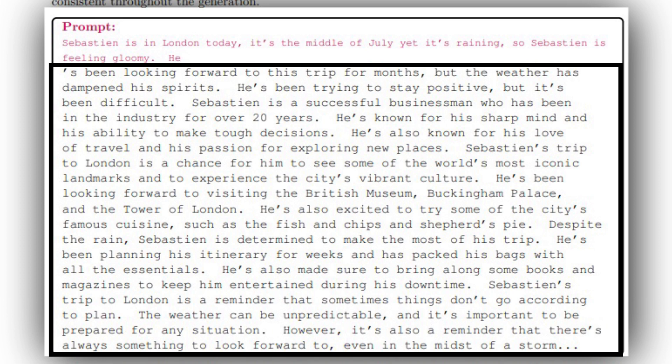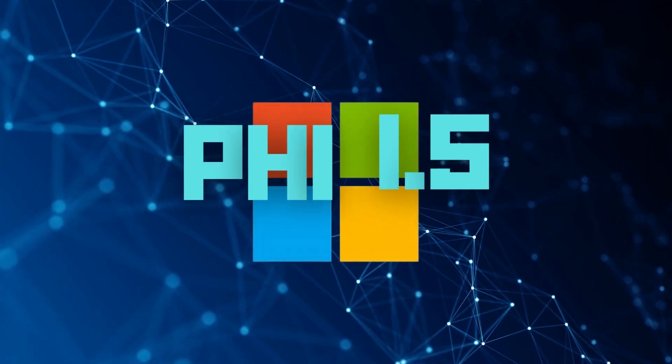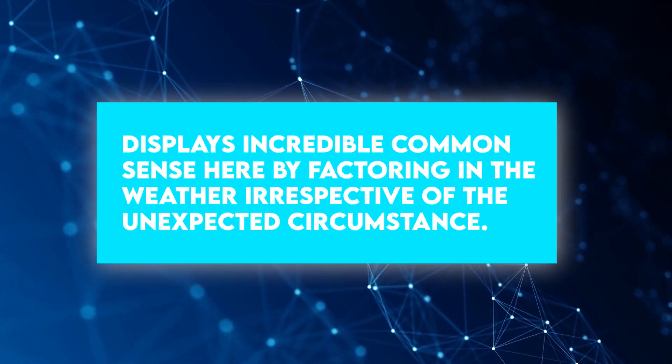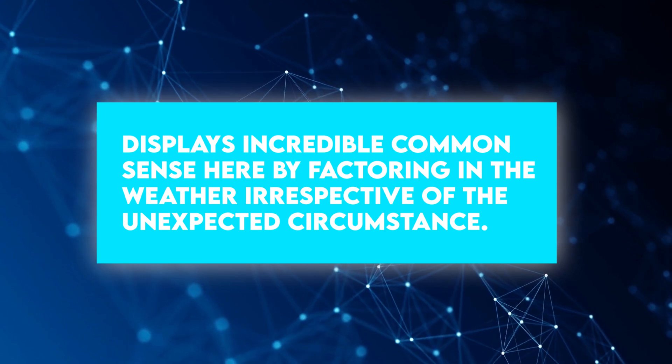When met with these kinds of confusing contexts, earlier Microsoft models would ignore the rain and may complete the story with contradicting texts. PHI 1.5 displays incredible common sense here by factoring in the weather irrespective of the unexpected circumstance.